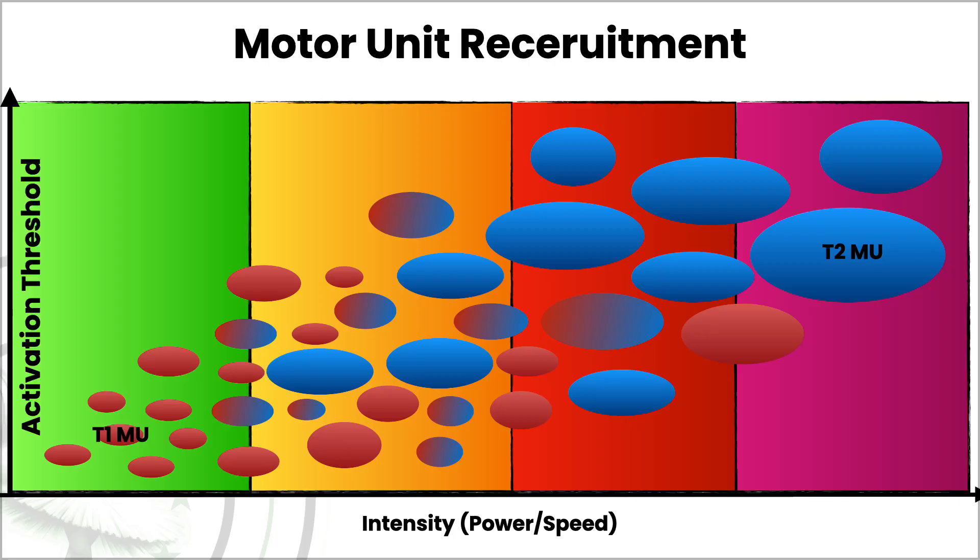Once you understand muscle typology and how different muscle fibers work, we can start connecting all the dots. We know how muscle fibers are recruited — it's called the Henneman principle, the size principle — meaning motor units are recruited in sequence depending on the amount of force that needs to be generated. At low intensities we recruit low activation threshold motor units, usually linked to slow twitch fibers in smaller numbers. The more force you need, the higher up you go on the spectrum, the more motor units you need to recruit.